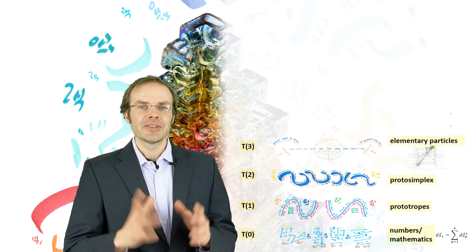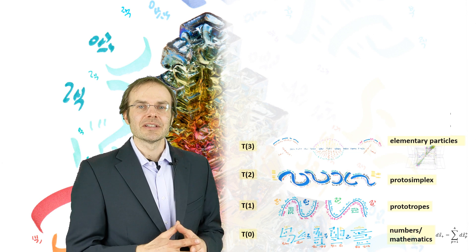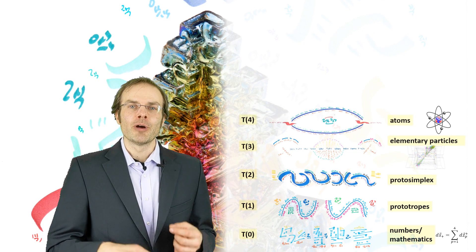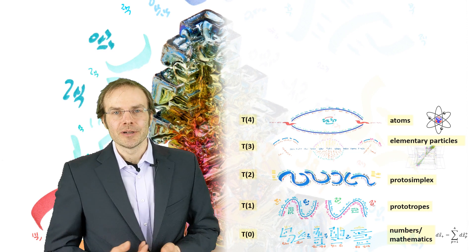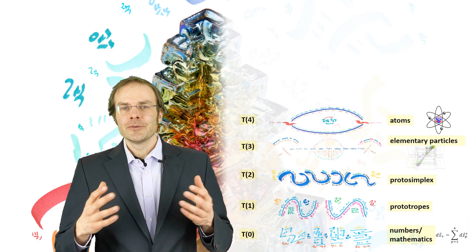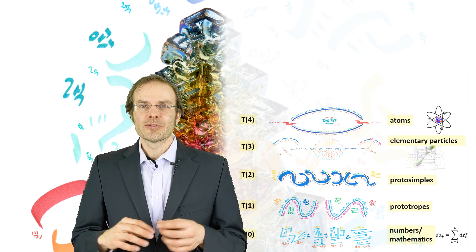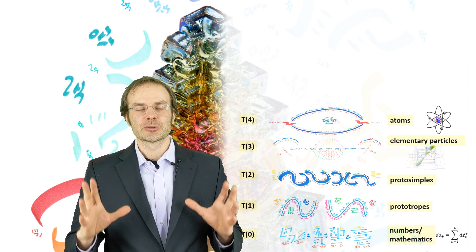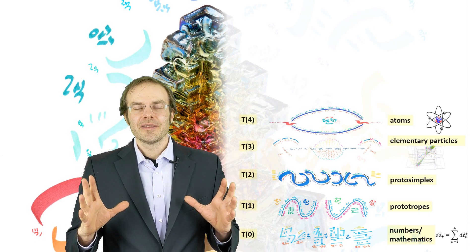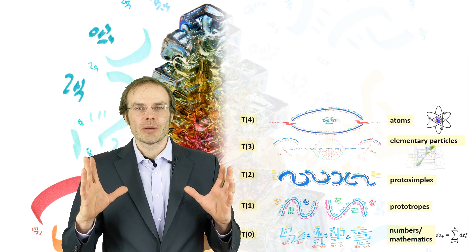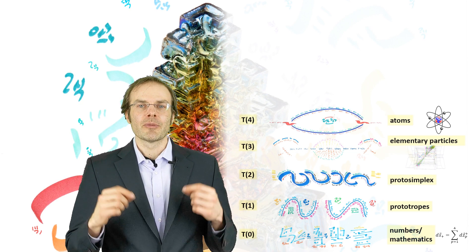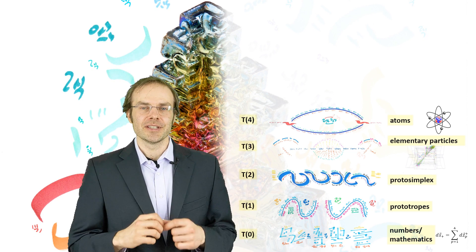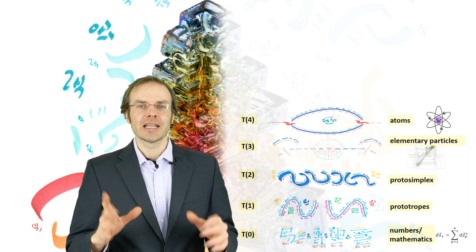But now I have my elementary particles. From elementary particles, I can assemble the atoms, and atoms, of course, now form the next totality, number 4. The elementary particles form the atomic nuclei, and those are surrounded by the electron hull. The idea of the atom cannot be derived from the properties of elementary particles. There are new laws in effect here—that's why we need a new totality.